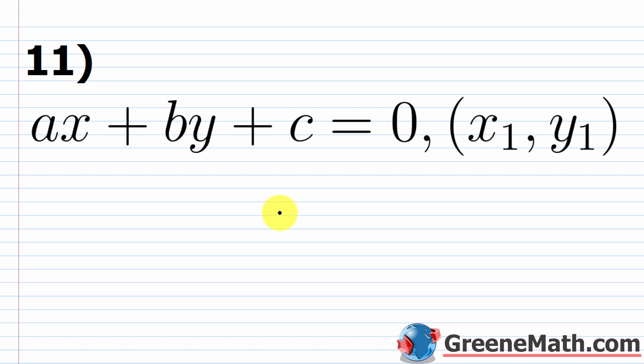For problem 11, we want to think about deriving the full formula. This does take quite a while because we're going to do it using algebra. Some people prefer a geometric approach, which is a little bit quicker. The first thing is, I have my equation ax plus by plus c equals zero, given in what we call general form.